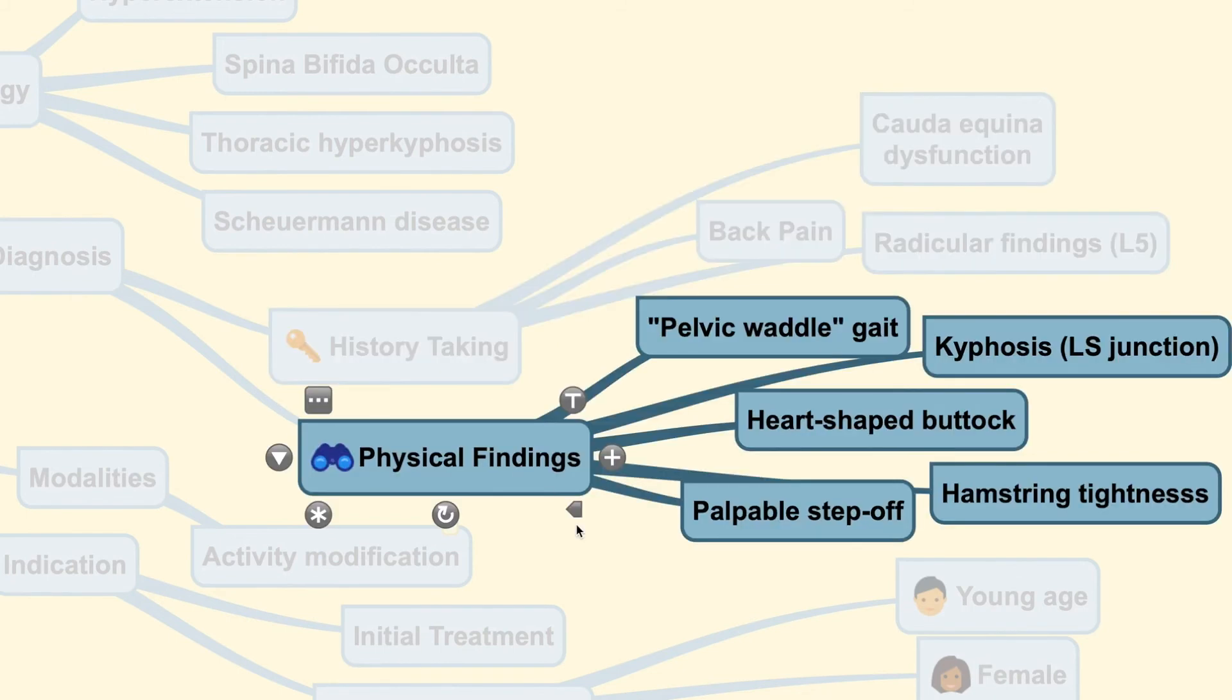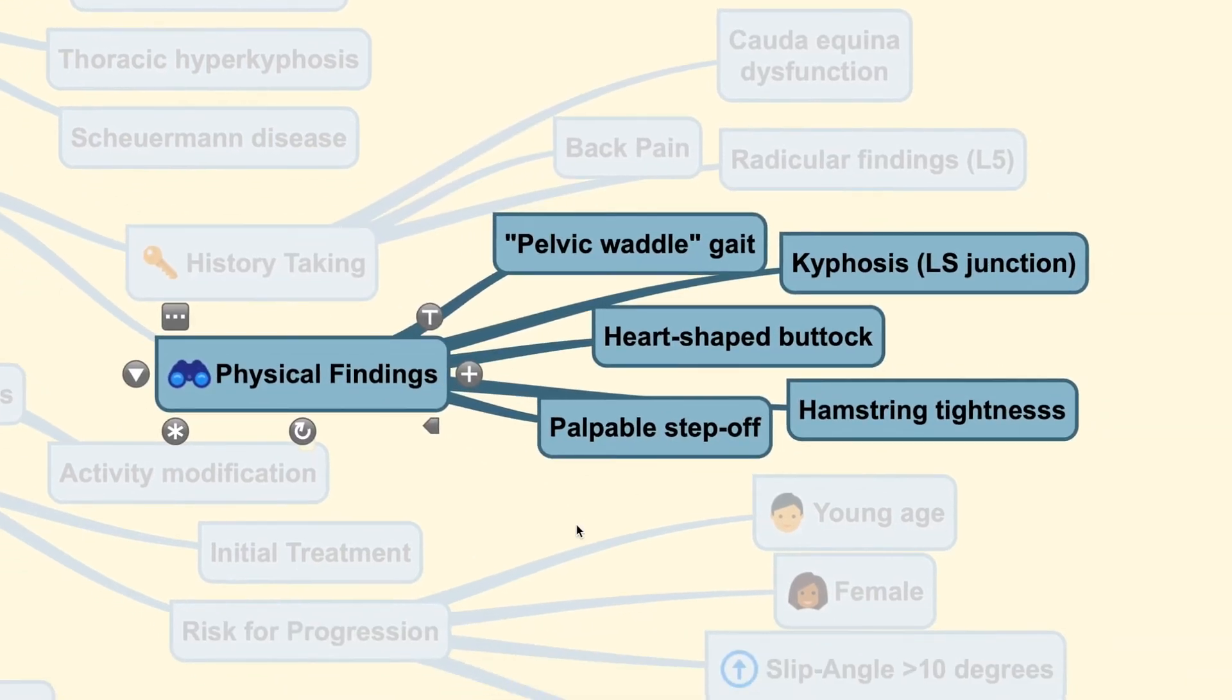For the physical findings, patients with spondylolisthesis pediatric population usually may present with a waddle gait caused once again by the L5 radiculopathy. And the patient may also have a heart-shaped buttock with a palpable step-off of the posterior region along with tightness of the hamstring muscles.